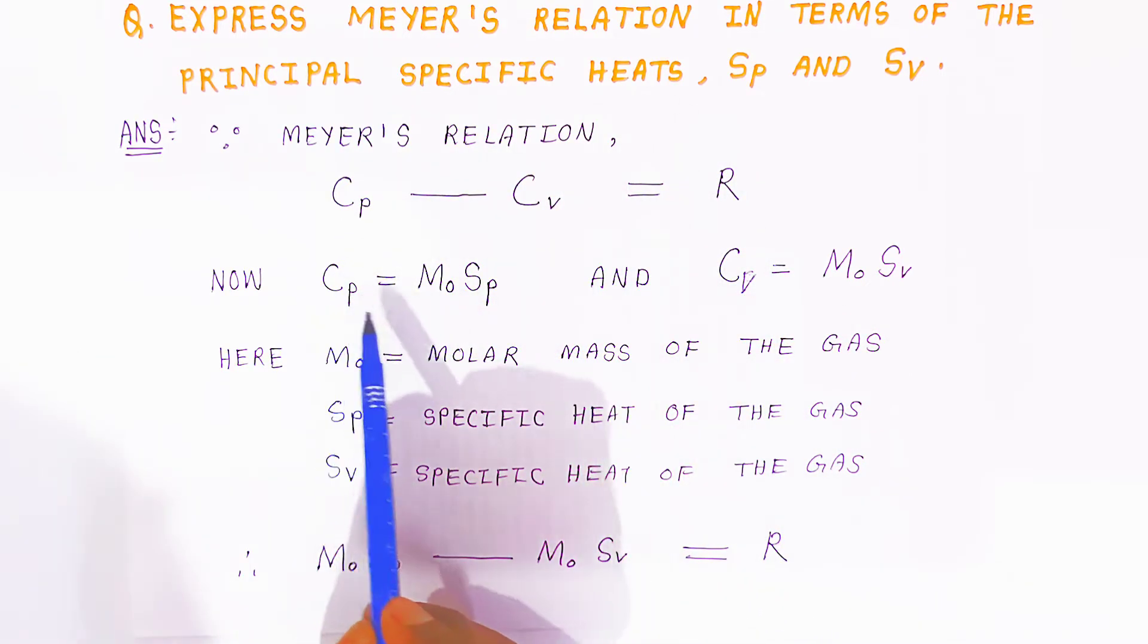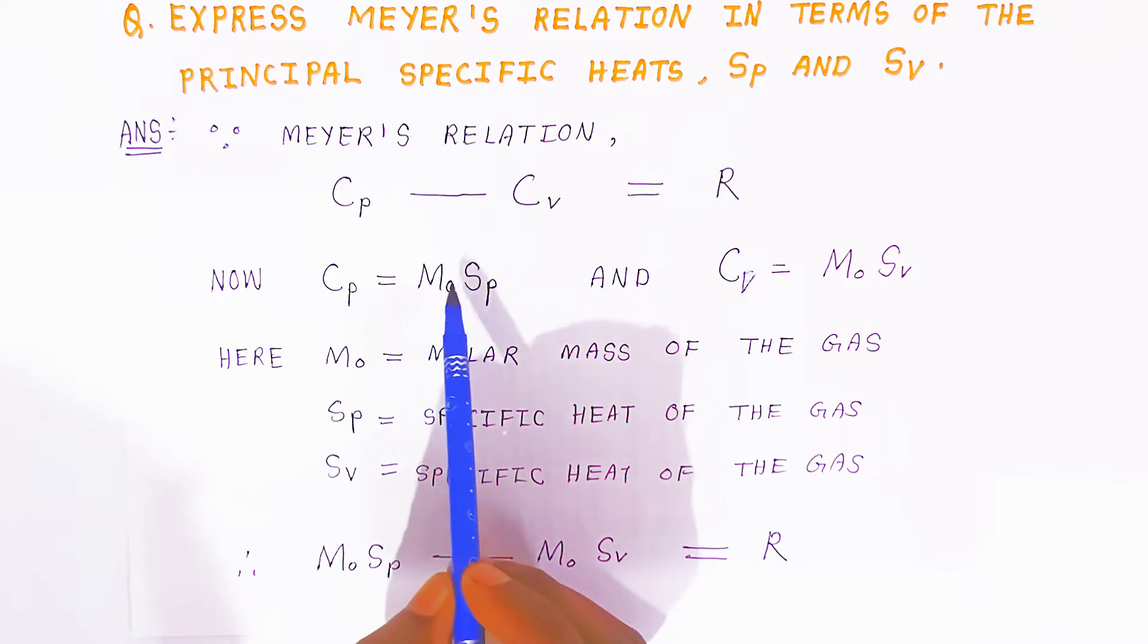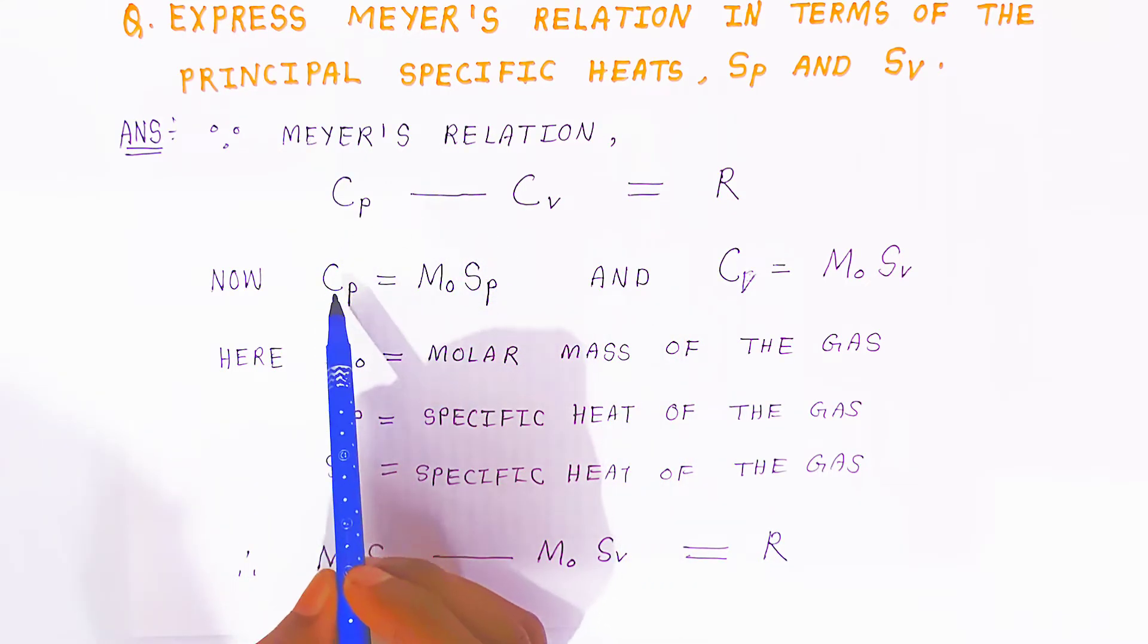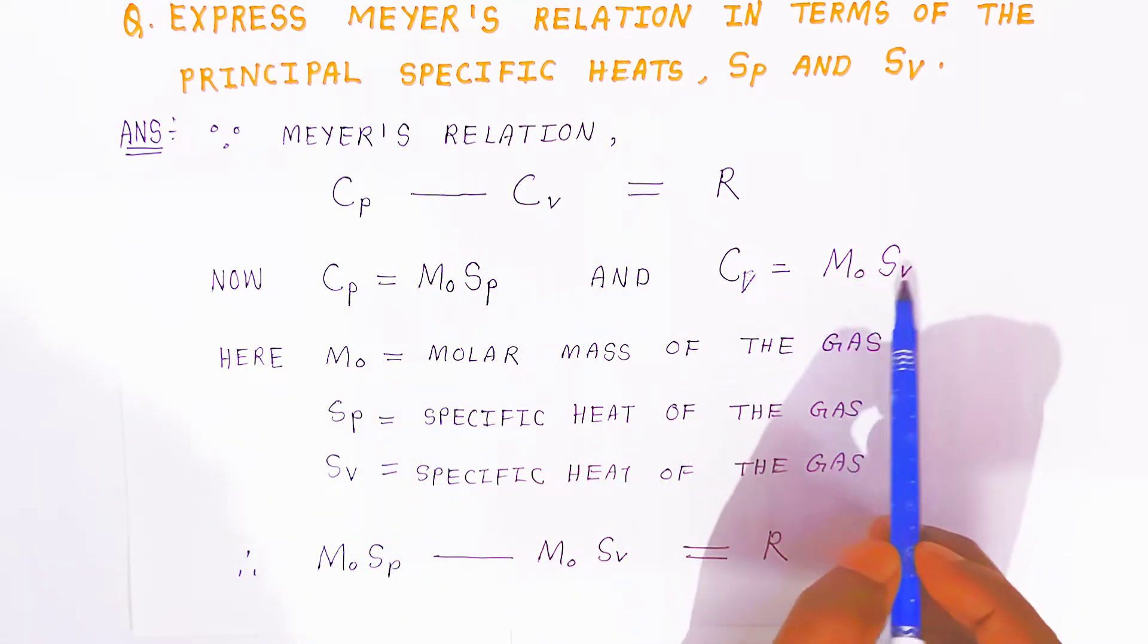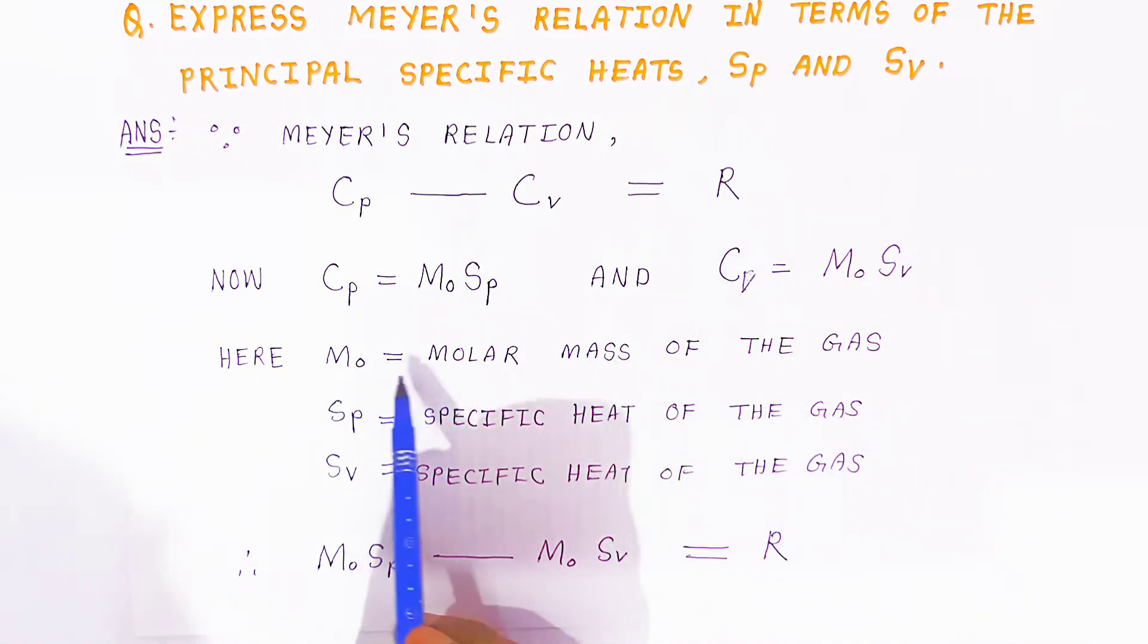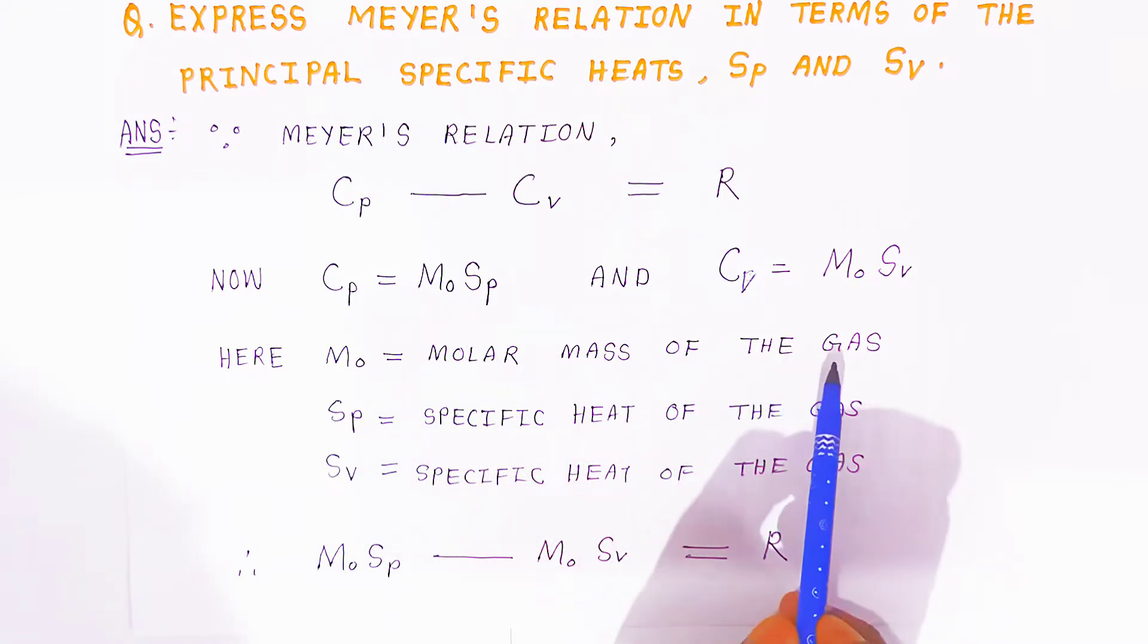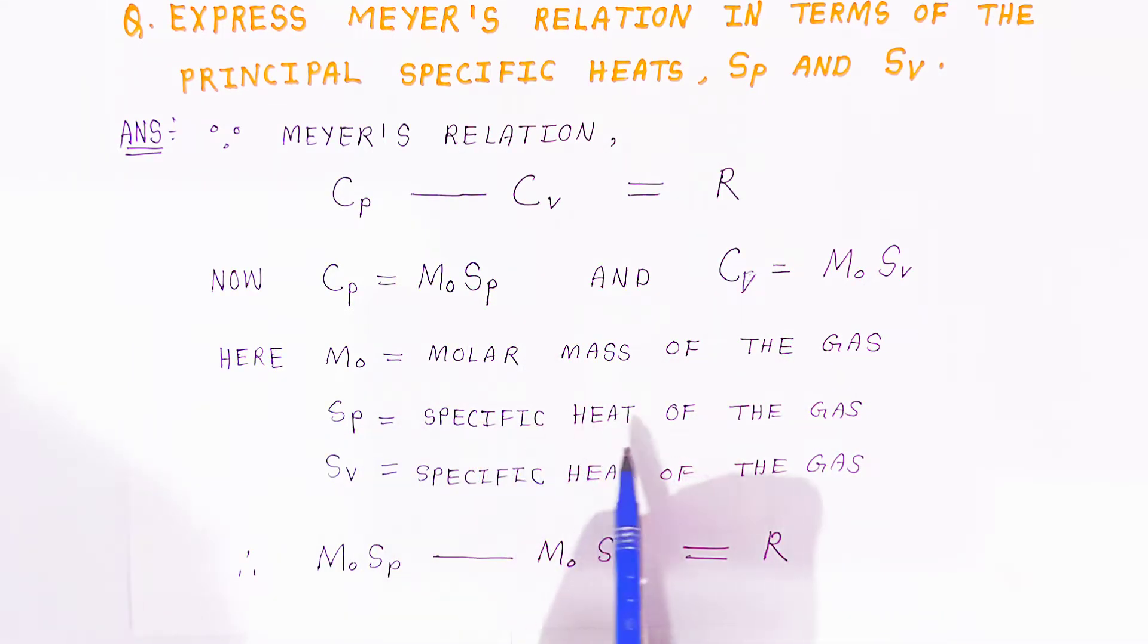Now Cp is written as M0 times Sp, and Cv is written as M0 times Sv, where M0 is the molar mass of the gas, Sp is the specific heat of the gas at constant pressure, and Sv is the specific heat of the gas at constant volume.